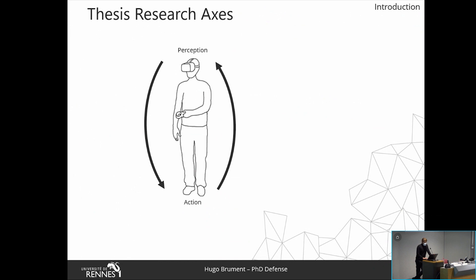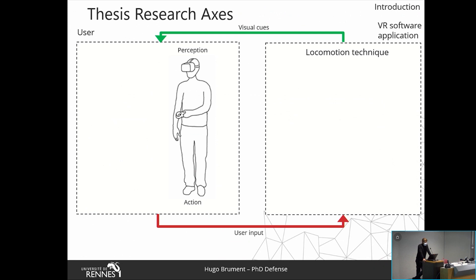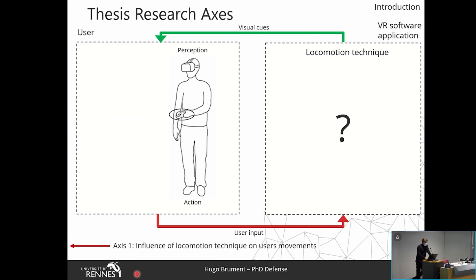In VR, the user interacts with a VR software application, and in order to navigate in the virtual environment, a locomotion technique is required. The current perception-action loop is modified: users provide inputs as actions to interact with the locomotion techniques, and the VR software application gives visual feedback so that they can perceive their movement in the virtual environment. The feedback provided by the VR system could be different from the feedback received in the real environment, and so the perception-action loop is modified. We focus on how the impact of the locomotion techniques on this loop could be, and to investigate this we had two research axes.